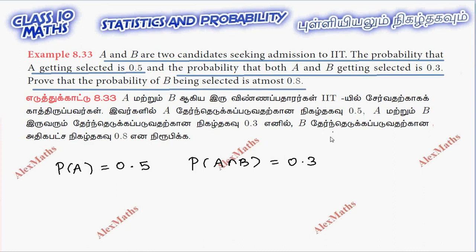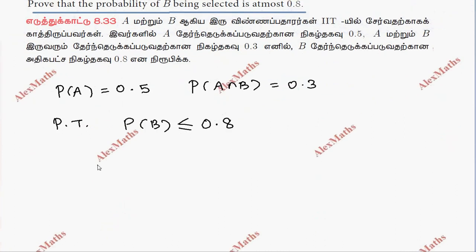We need to prove that the probability of B being selected is at most 0.8, that is P(B) is less than or equal to 0.8. For the proof, we use the fact that P(A union B) is less than or equal to 1, since the maximum probability is 1.